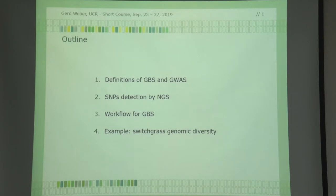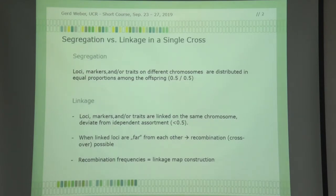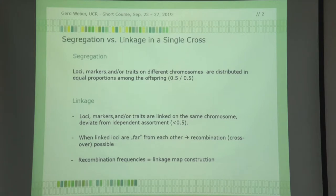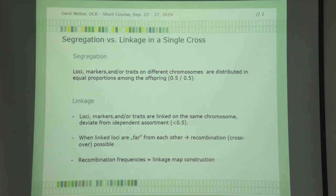We look at SNP detection by mixed-generation sequencing, at the GBS workflow, and I'll bring you an example where they used this technology to look at populations of switchgrass. Switchgrass is considered in North America as one of those renewable resources — it grows rapidly, you get a lot of biomass, and you can use it in bio-fermenters. Remember: segregation means equal amounts of independent segregation — individual linkage groups segregate independently from each other. The proportion is half and half.